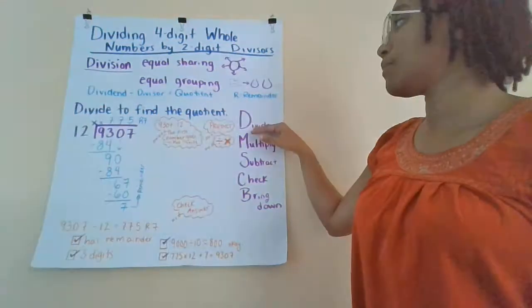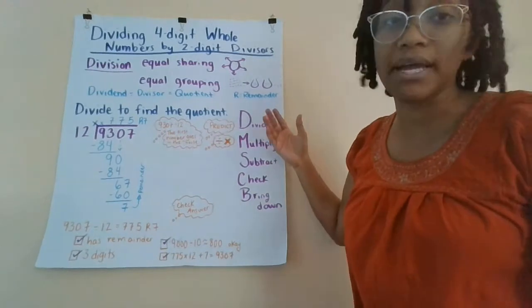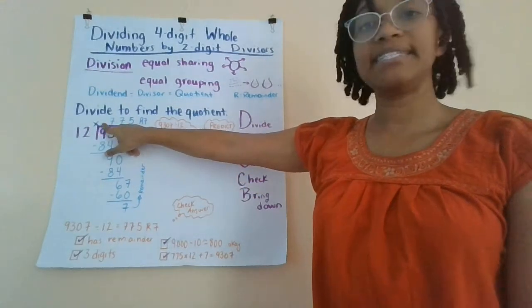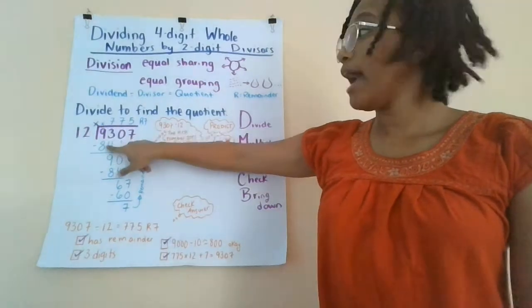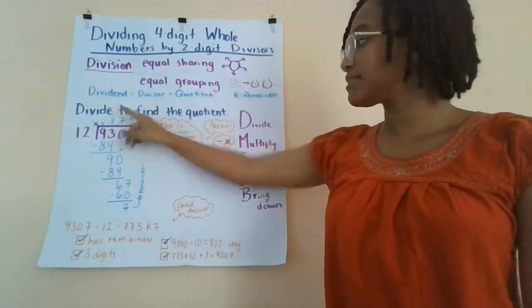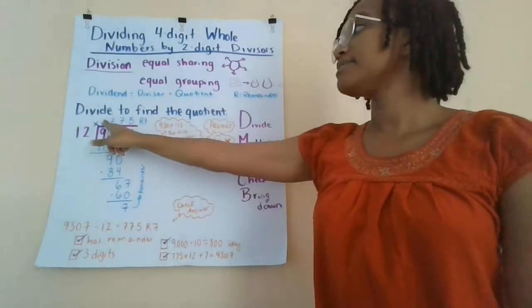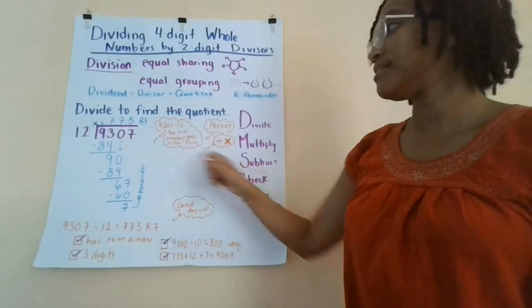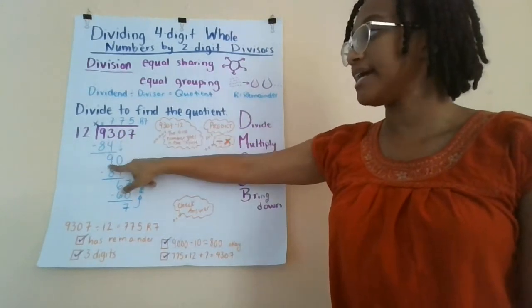When we divide, the first thing we're going to do is divide. How many times does 12 go into 9? It doesn't, so we put an x. How many times does 12 go into 93? It goes in seven times. Now I multiply. Seven times 12 is 84. Next step, subtract. 93 minus 84 is 9.